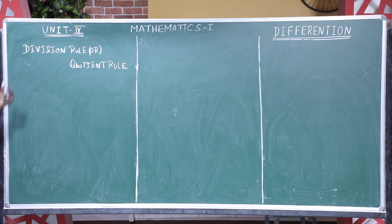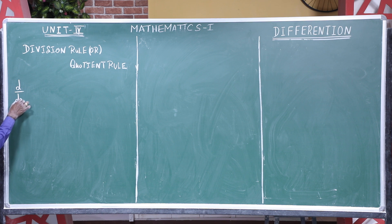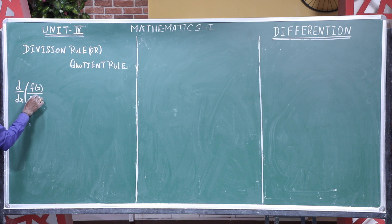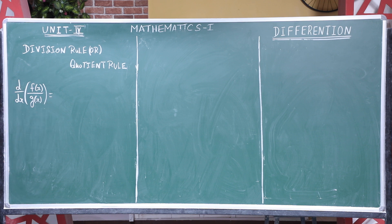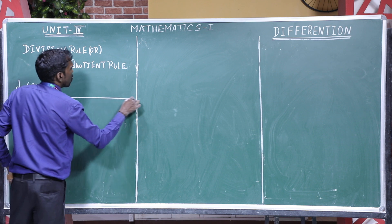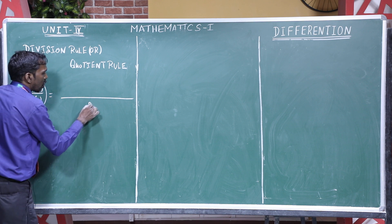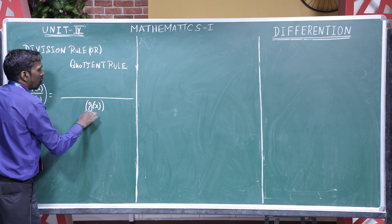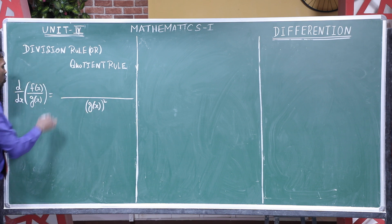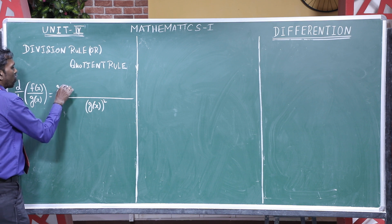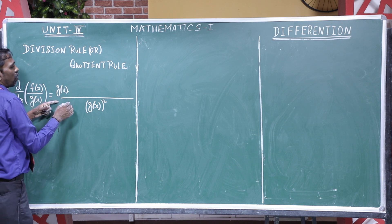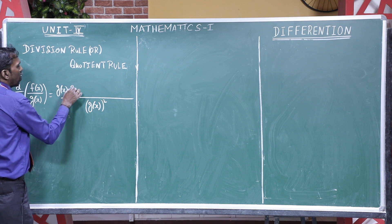For example, you have a numerator with one function and a denominator with another function. So, we take d/dx of f(x) divided by g(x). The term in the denominator is g(x), placed in the denominator as a whole square. Then we take g(x) multiplied by the derivative of f(x), which is f'(x).